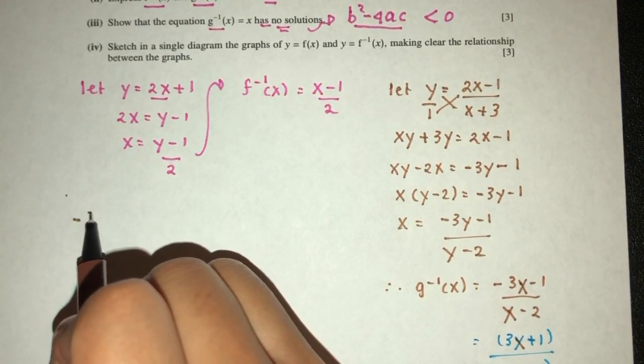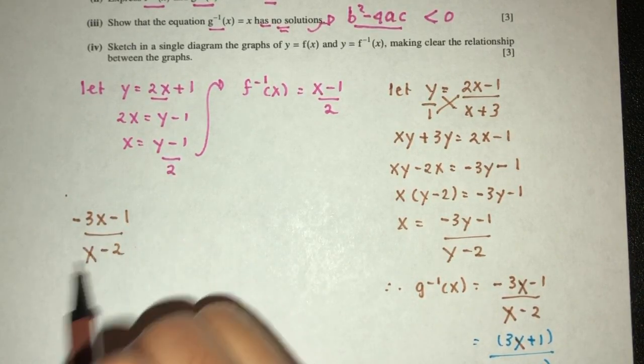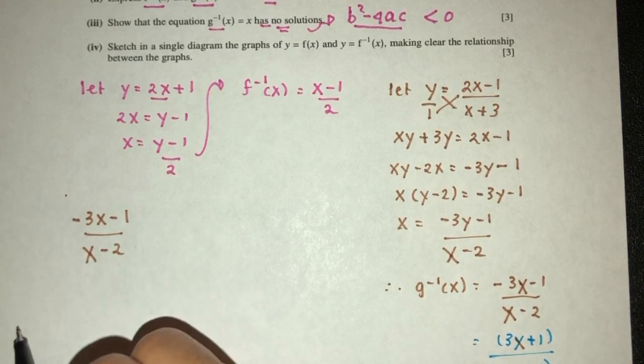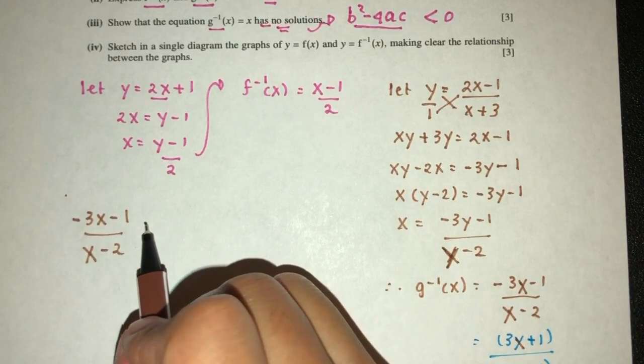That will be the same equation, minus 3x minus 1, this over 2, x again. Here we have y, sorry, here we have y, but here I have 2x. And that should be equal to x.